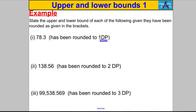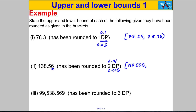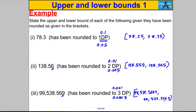State upper and lower bounds given the rounding in brackets. Rounded to 1 DP (nearest 0.1): half of 0.1 is 0.05, so lower bound is 78.25 and upper bound is 78.35. Rounded to 2 DP (nearest hundredth): half is 0.005, giving lower bound 138.555 and upper bound 138.565. Rounded to 3 DP (nearest thousandth): half of 0.001 is 0.0005, giving lower bound 99538.5685 and upper bound 99538.5695. And that's it for an introduction to upper and lower bounds.